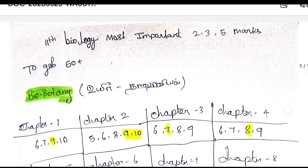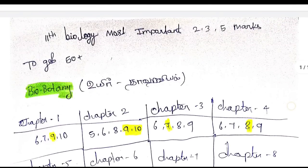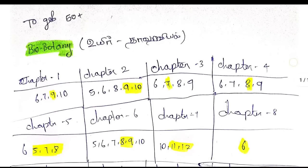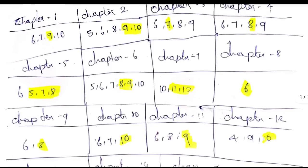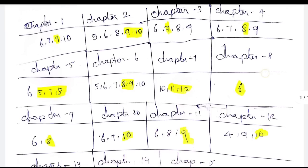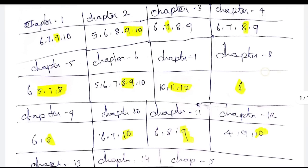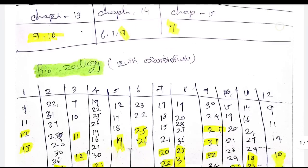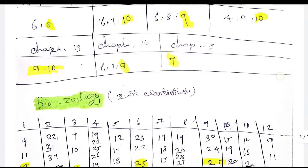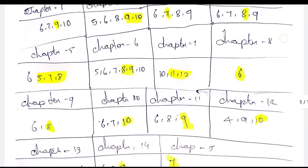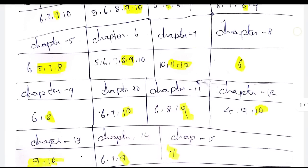All these are very important 2-mark, 3-mark, and 5-mark questions for the public examination to get 50 plus marks — even 70 out of 70 is possible if you study these questions. Minimum you can score 55 marks. Subscribe to my channel, click the bell icon, and download the PDF from the link in the description. Thank you so much for watching.